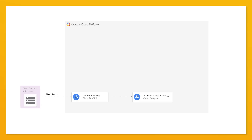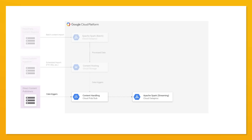This is where we do the entity extraction, we cluster the content, and we interact with all of these machine learning models that we have trained. These models are trained in Apache Spark as well in a batch processing unit, which runs on ephemeral clusters with preemptive nodes — which is awesome because then we can just spin up a thousand nodes and train really expensive models for a short time without having to leave them running.